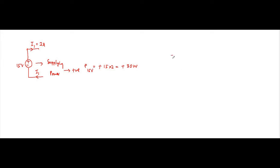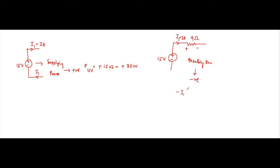Next is the 9 ohm resistor connected to the 15 volt voltage source. Current I1 of 2 amperes flows through it from positive to negative internally, which means it is absorbing power, taken as negative. The power absorbed by the 9 ohm resistor is minus I1 squared times R, which is minus 2 squared times 9, equal to minus 36 watts.